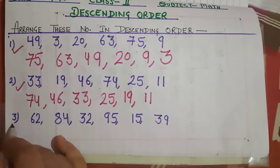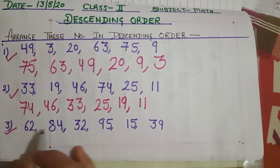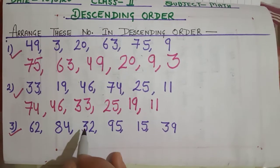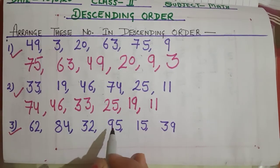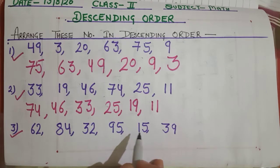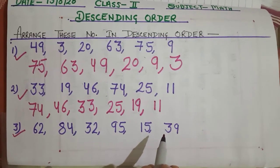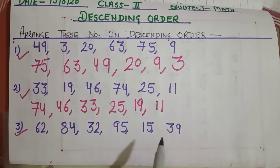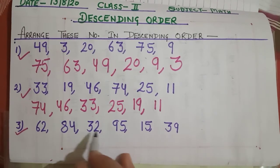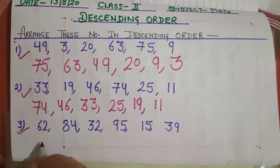Now your third question: 62, 84, 32, 95, 15, 39. Let us find out the greatest number. Yes, the greatest number is 95.